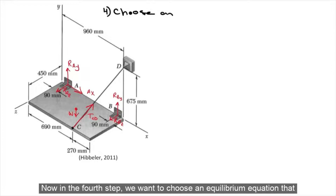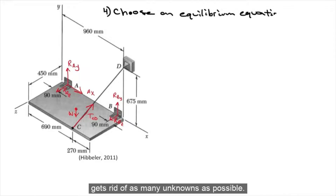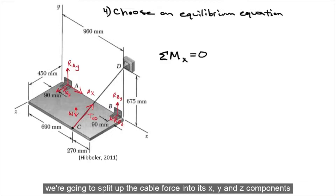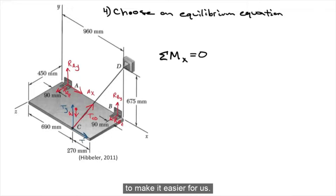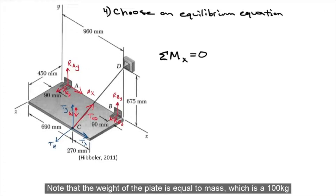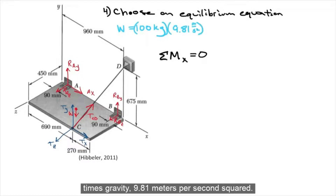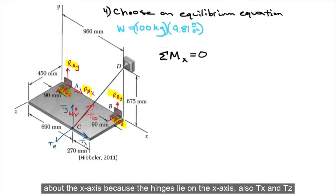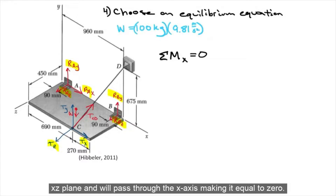In the fourth step, we want to choose an equilibrium equation that gets rid of as many unknowns as possible. This happens to be the summation of moments about the x-axis, since most of the forces pass through the x-axis. Before we write out the equation, we're going to split up the cable force into its x, y, and z components. Note that the weight of the plate equals mass (100 kg) times gravity (9.81 m/s²). All the forces at the hinges will not create a moment about the x-axis because the hinges lie on the x-axis. Also, Tx and Tz will have no contribution to the moment because they lie on the x-z plane and pass through the x-axis, making their contribution equal to zero.